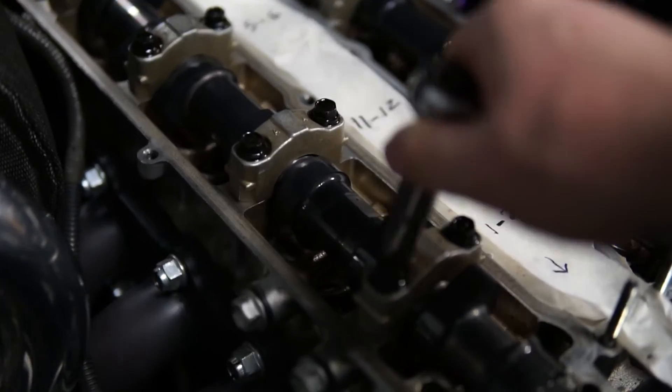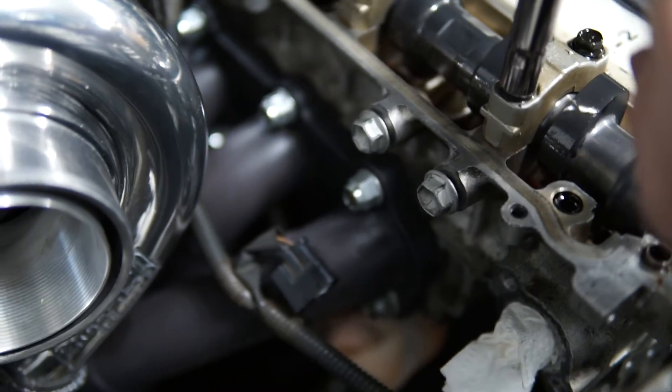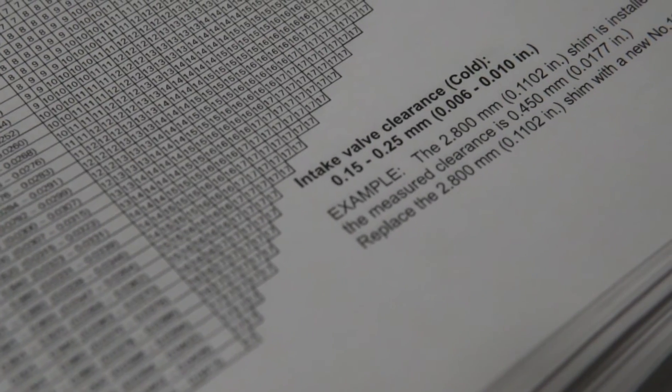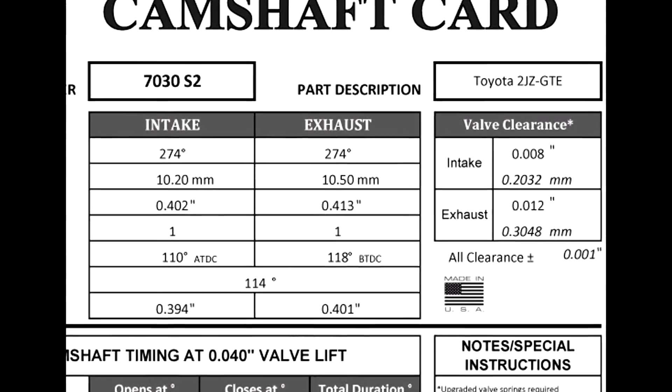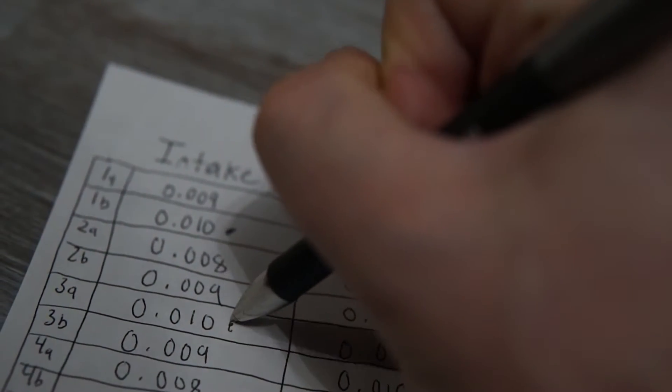Once each valve location's clearance is recorded, you'll need to remove the camshafts to access the valve bucket assemblies. Compare all the recorded clearances to the manufacturer's spec. Any clearances that are not in line with the spec will need to be adjusted. Note the location of the valves that need adjustment.